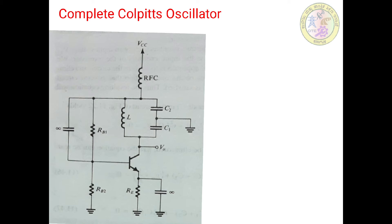In this circuit, inductor L, C1, and C2 form the tank circuit, and the biasing and stabilization is provided by resistors Rb1, Rb2, as well as the emitter resistor RE. The RFC choke provides high reactance at frequency ω₀ but a low DC resistance. Capacitor CE connected across RE acts as a short circuit at high frequencies, so that the output is completely fed back to the input terminals through the coupling capacitor CC in correct phase.